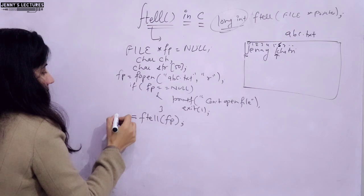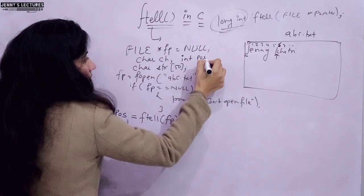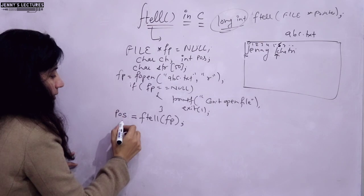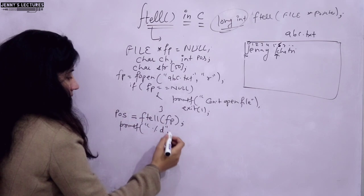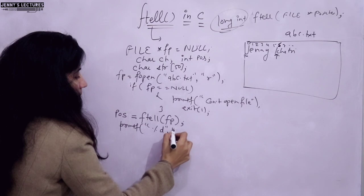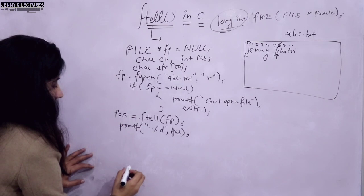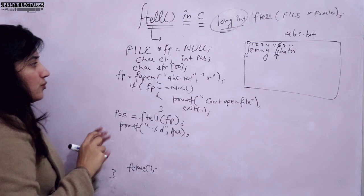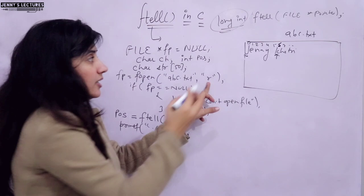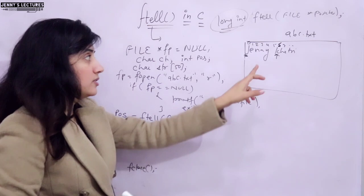I declare variable pos, then pos = ftell(fp), and print it using printf with %d. At the start, since we opened the file in read mode, the file pointer is at the beginning, so pos will be 0 — it will print 0. At last, fclose. So if you run this program, the output will be 0.